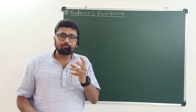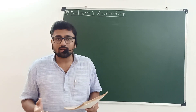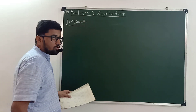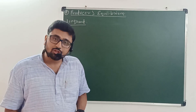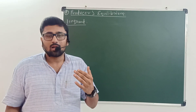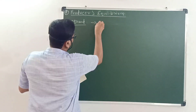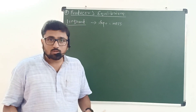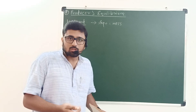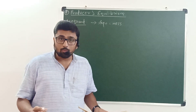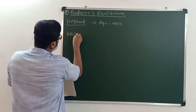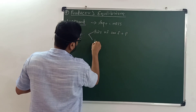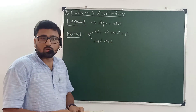We can understand the idea of producer's equilibrium with the help of iso-quant and iso-cost. Iso-quant shows all possible combinations of two factors of production which yield the same output. The slope of the iso-quant is the marginal rate of technical substitution, which shows the willingness of the producer to give up one factor of production for an additional unit of another. Iso-cost line indicates the price of two factors of production and total cost.